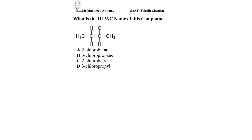Let's find the IUPAC name of this compound. First of all, we have to choose the longest straight alkane chain. We should start from the right or from the left. We have a substituent, and at position number two, you have to start from the right: one, two, three, and then four if you start from the left.